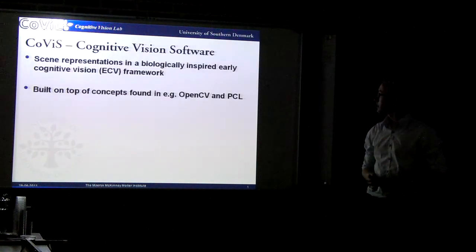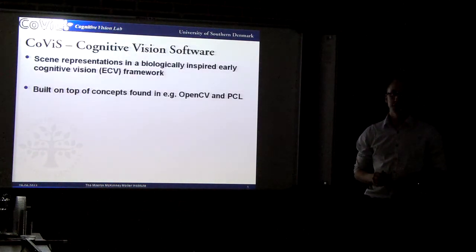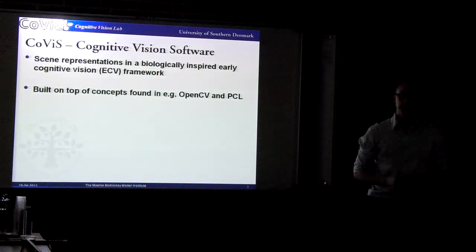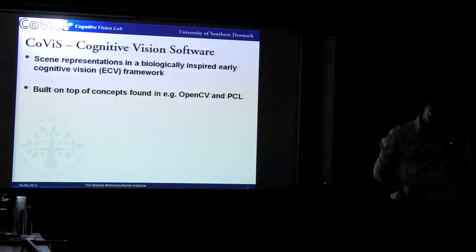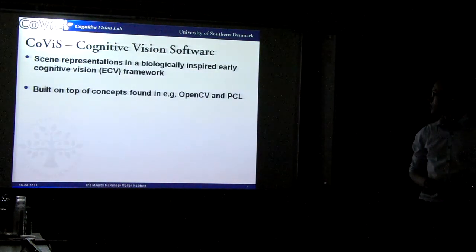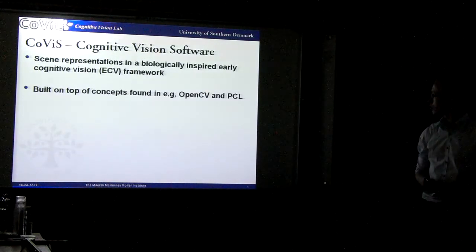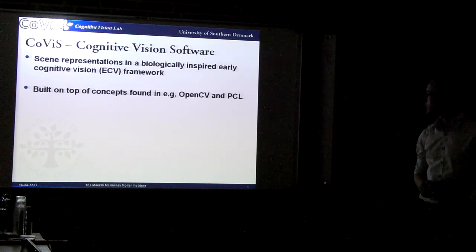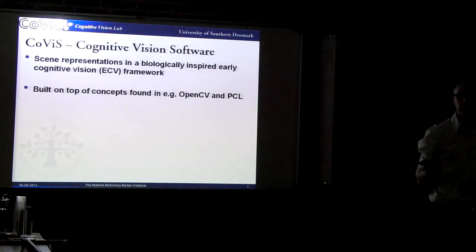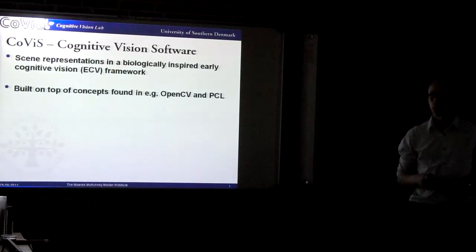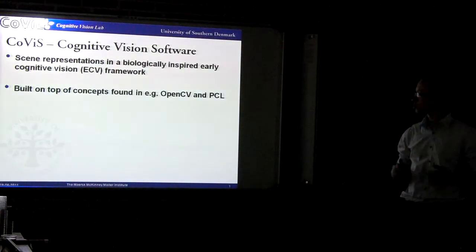CoVIS is a biologically inspired early cognitive vision framework — early cognitive meaning it's in the early stages of cognitive vision, inspired by what we know is going on in the human brain. It's built on top of concepts found in OpenCV, which is basically a huge library of well-known and commonly used image processing functions, and we link against CoVIS. You could also look at CoVIS as a point cloud library, because one of our stages is an extended point cloud.